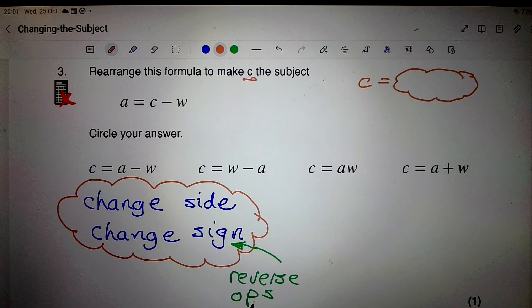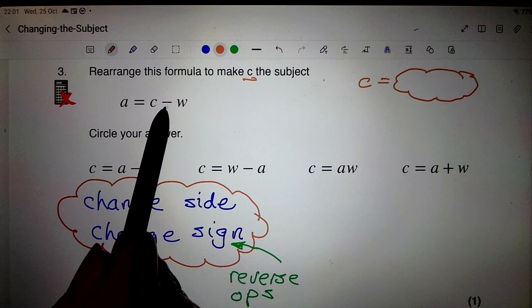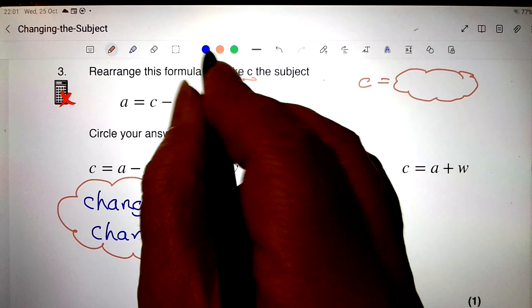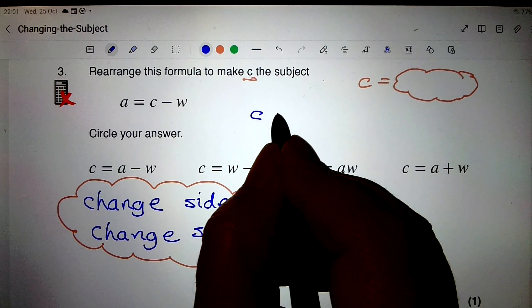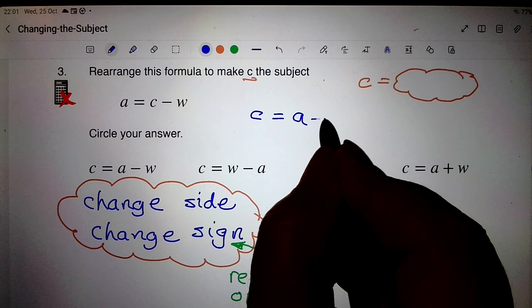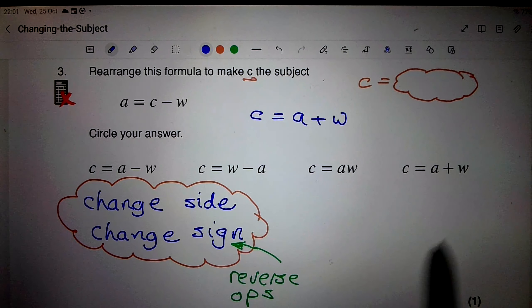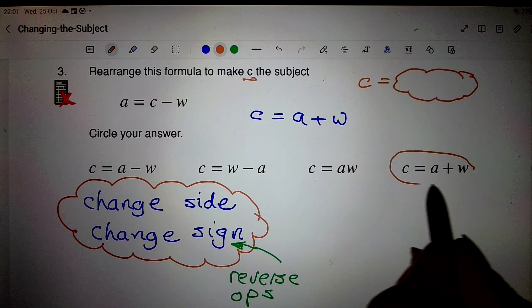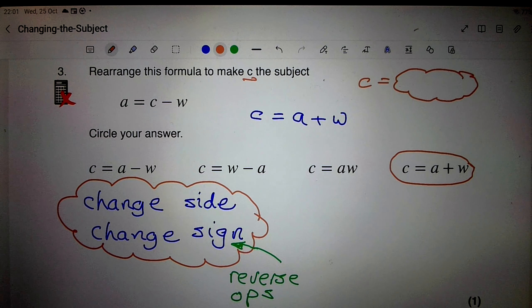So I'm going to finish up with c equals a plus w. There it is. You see, I missed out the intermediate stage there.